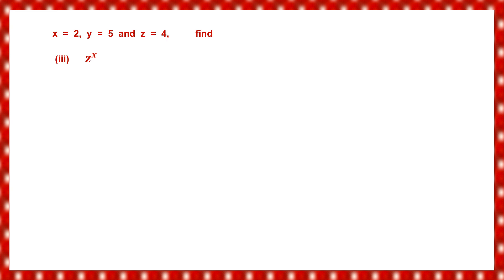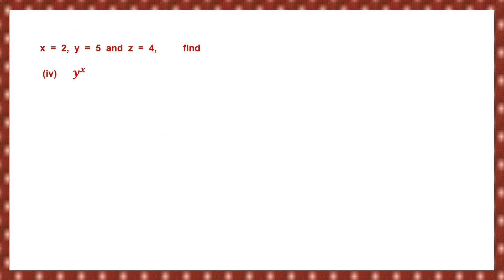The third question is z raised to the power of x. z is 4 and x is 2, so it is 4 raised to the power of 2, which is 4 into 4, and 4 fours are 16. So the answer is 16. The fourth one is y raised to the power of x — y is 5 and x is 2 — so this means 5 into 5, which is 25. So the answer is 25.